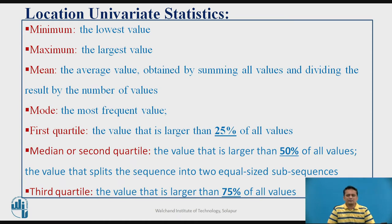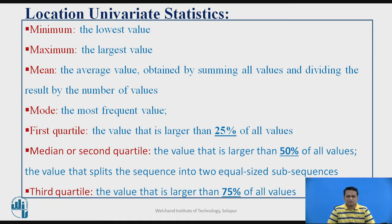Then comes the mean value, also called the average value. How we obtain the mean is by summing up all attribute values and dividing by the number of instances considered. For example, when you appear for exams across five or six different courses in your semester, the average percentage marks across all subjects is a parameter called mean.